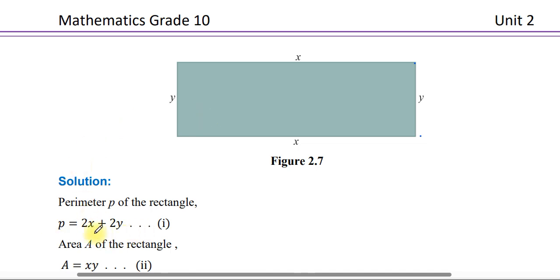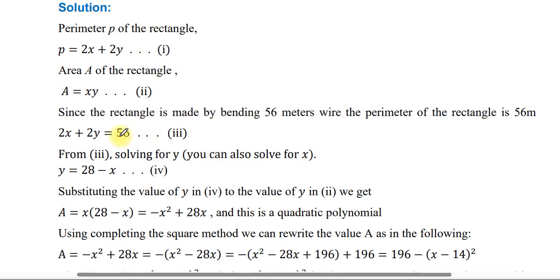Since the rectangle is made by bending a 56-meter wire, the perimeter of the rectangle is 56. So 2X + 2Y = 56. This is the first equation. From this equation, solve for Y: Y = 28 minus X.